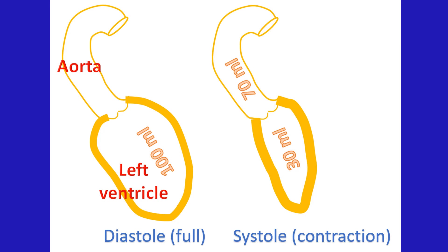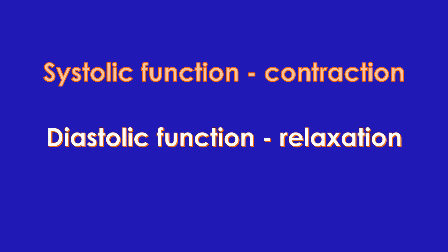While coming to function of the heart, the concentration is often on the left ventricle which pumps blood to the whole body. An important value in the report is the ejection fraction — the fraction of blood from the full left ventricle which is ejected out during each contraction. If 70 ml is pumped out during systole, the ejection fraction will be 70%. An ejection fraction below 50% is considered below normal; the lower the ejection fraction, the poorer the pumping function of the heart.